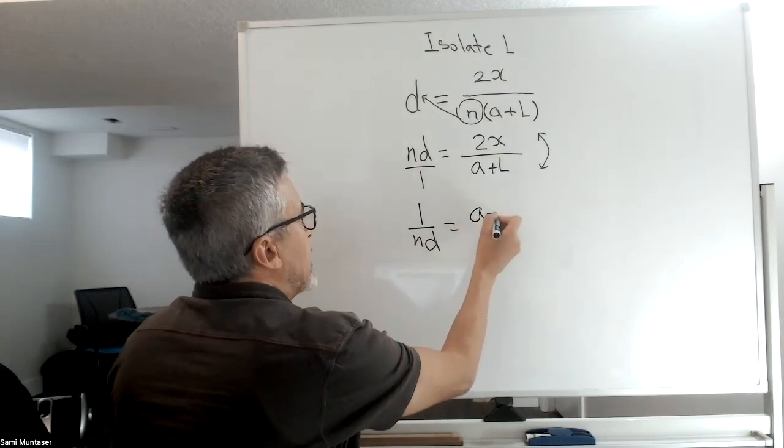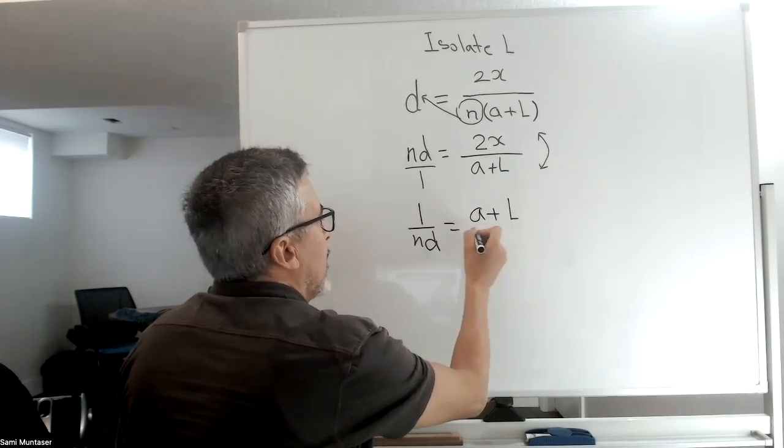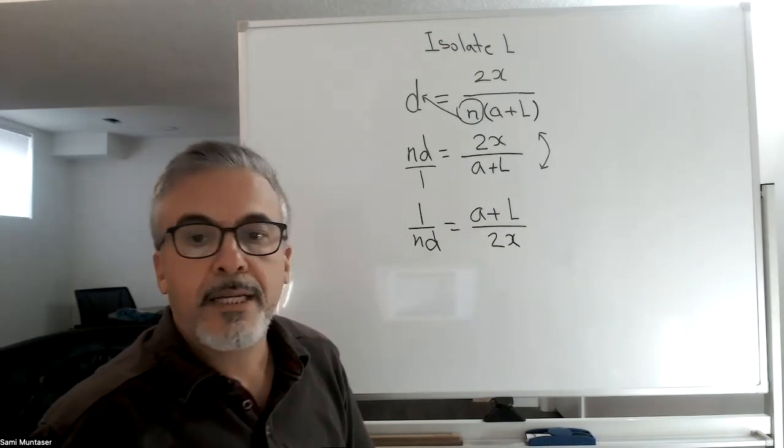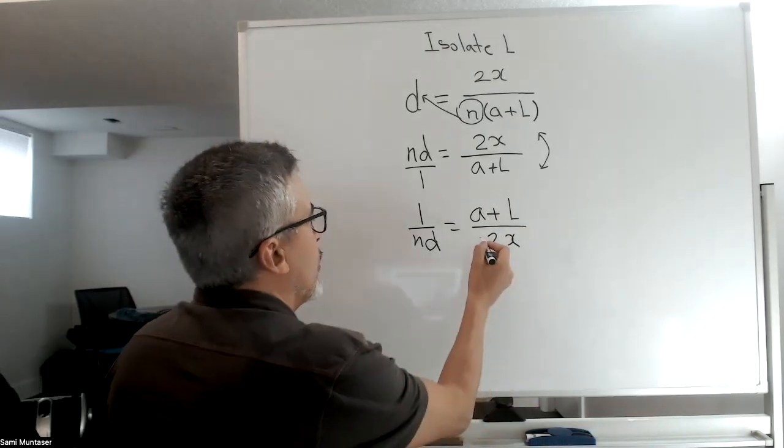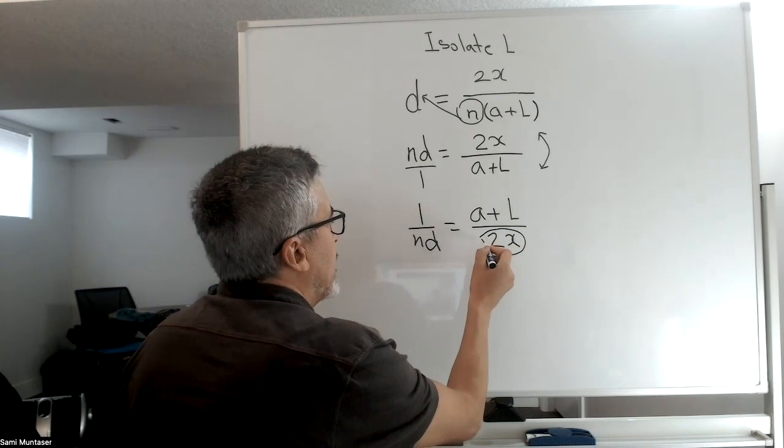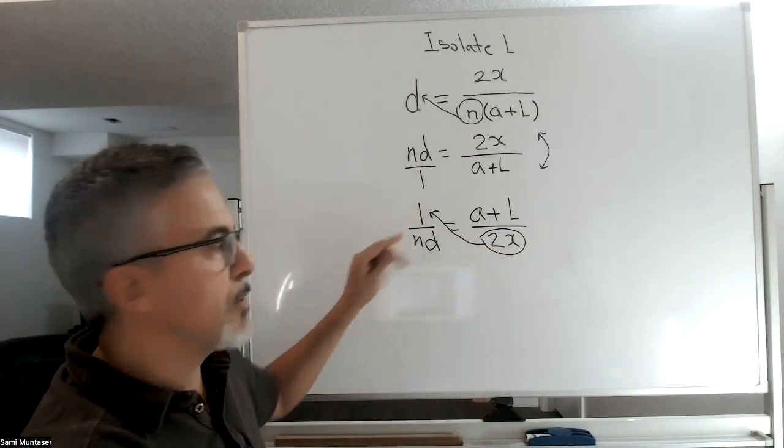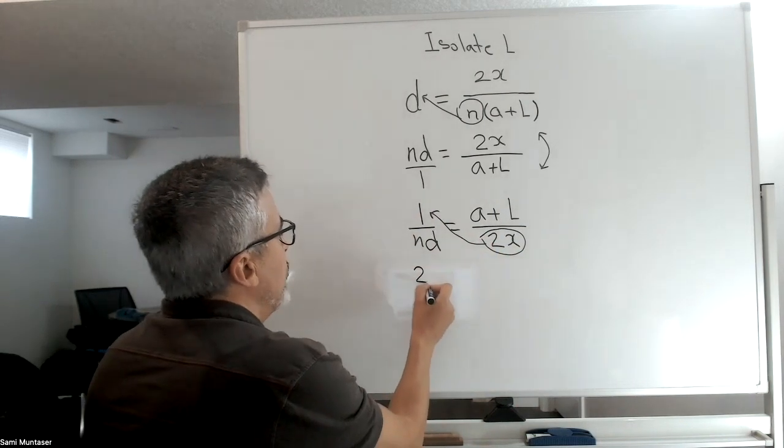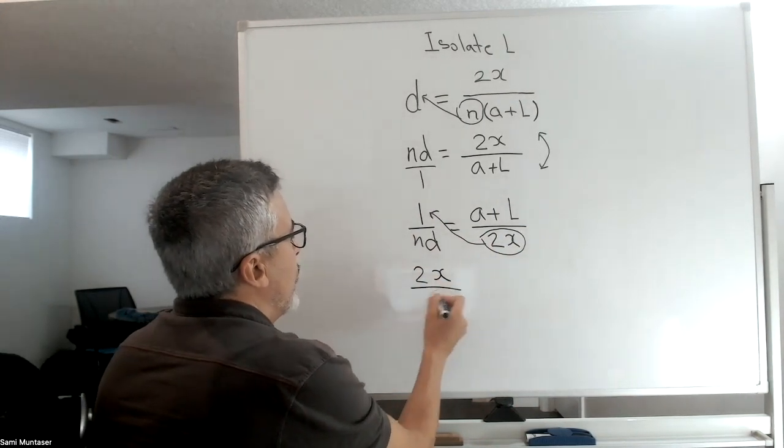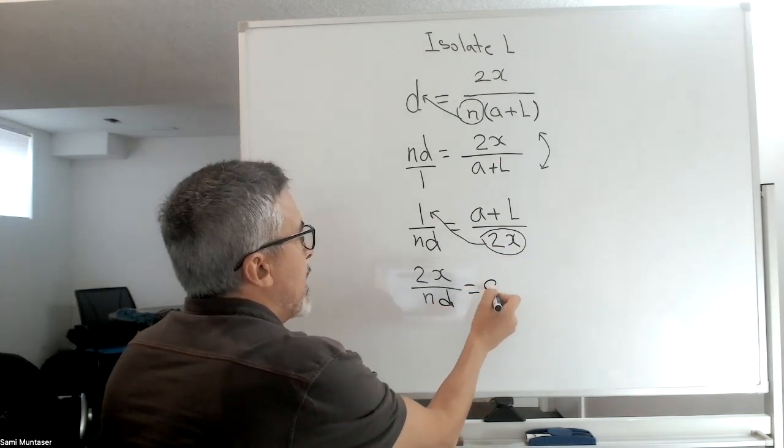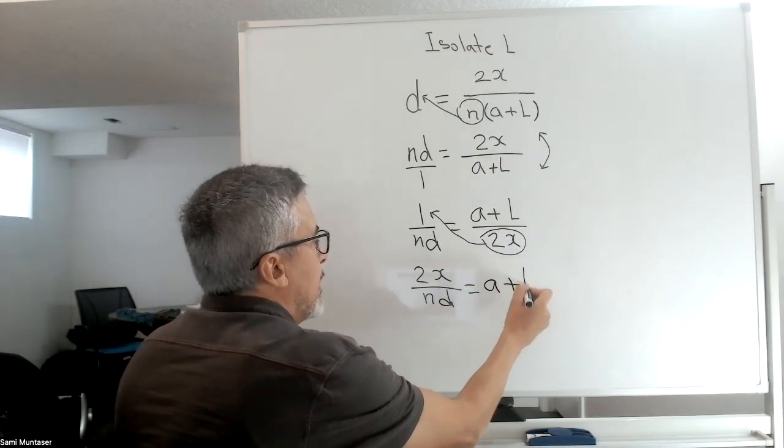Now I'm going to go back to cross multiplying. I want to cross multiply the 2x to the top because if it's on the bottom and it crosses the equal sign it goes to the top. So I'm going to have 2x over nd equals a plus L.